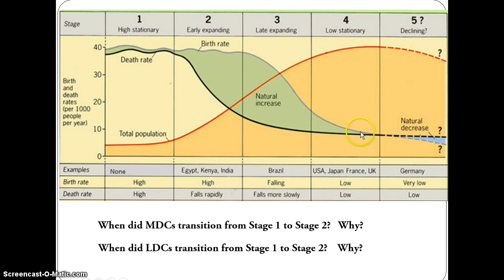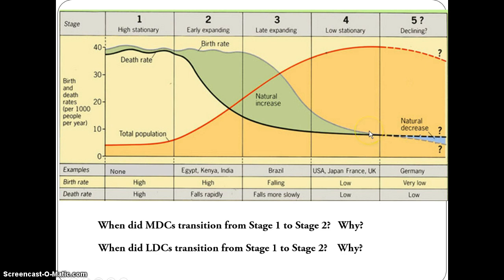In Stage 4, the death rate has stabilized, and the birth rate — because of social factors and customs — has gotten to the point where it has potentially met the crude death rate. When they meet, that's called ZPG, zero population growth. Keep in mind that a total fertility rate of 2.1 is necessary in order to reach ZPG.